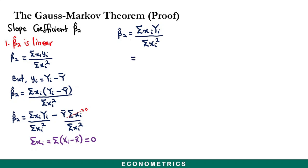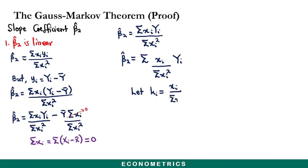We rewrite the same equation, separating terms on the right to introduce a new variable. For the numerator we have σxᵢyᵢ divided by σxᵢ². We introduce the variable kᵢ, which equals xᵢ divided by σxᵢ². In the end, β̂₂ equals the sum of kᵢ times Yᵢ. We have now proven that β₂ is a linear function of the dependent variable.